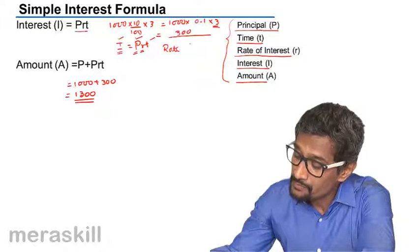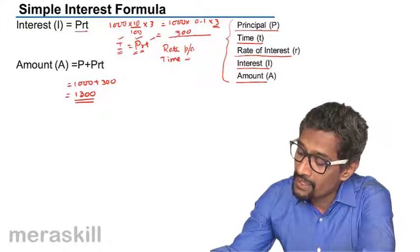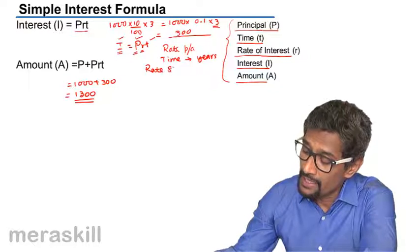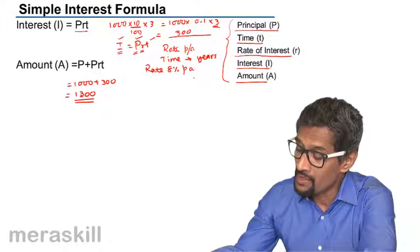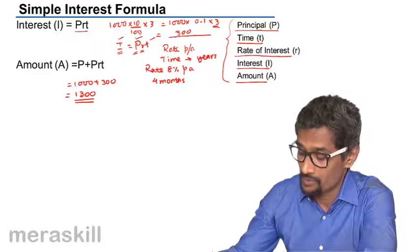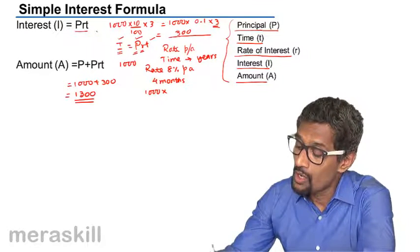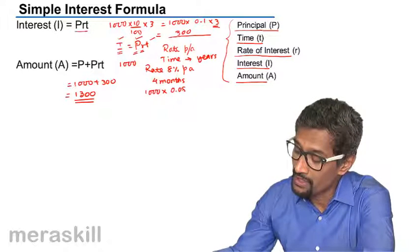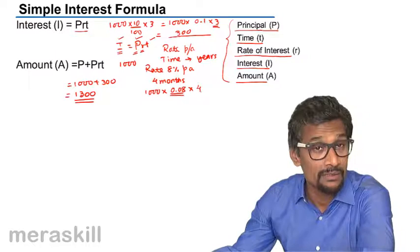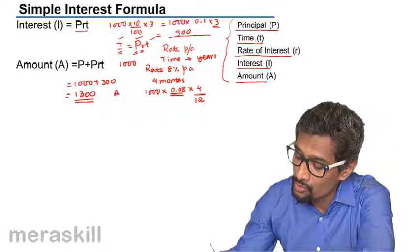The rate is normally given per annum and the time is normally given in years. For example, if the rate is 8% per annum and you need to calculate the simple interest for 4 months, you use the formula: principal × rate × (4/12). Here, you do not use 4 directly — since the rate is per annum, the time in months must be converted to years by dividing by 12.